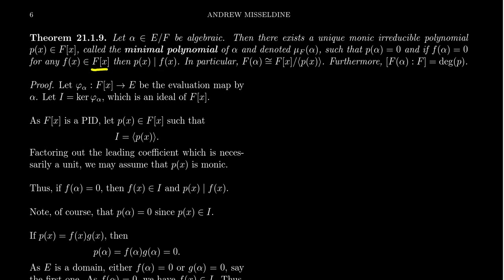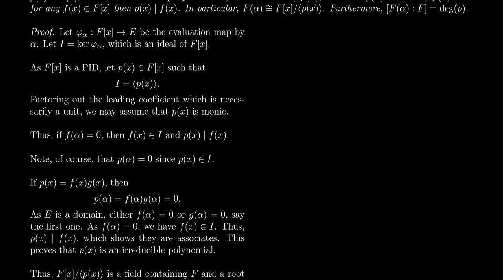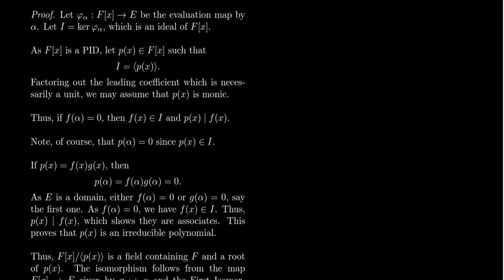In particular, the simple extension F(alpha) is isomorphic to the field F[x]/(p(x)). This second field is precisely what we constructed in Kronecker's theorem — we're solidifying those details here. Furthermore, the degree of the extension F(alpha) over F equals the degree of the minimum polynomial, making this a finite extension. To prove this, we construct the evaluation map φ_alpha from F[x] into E, which is a ring homomorphism with kernel I, an ideal of F[x].